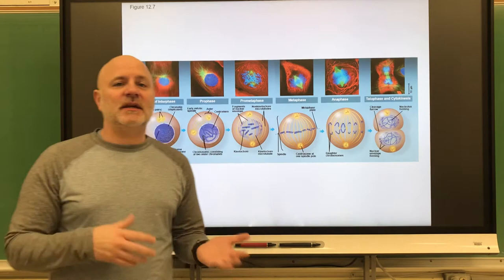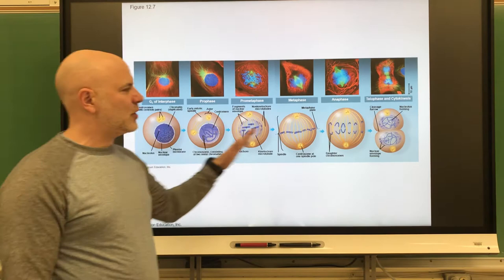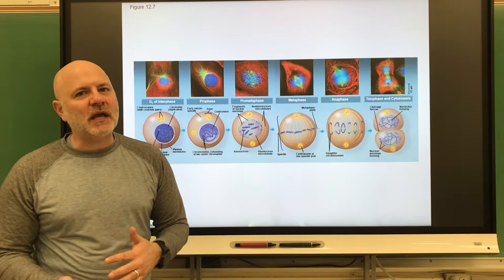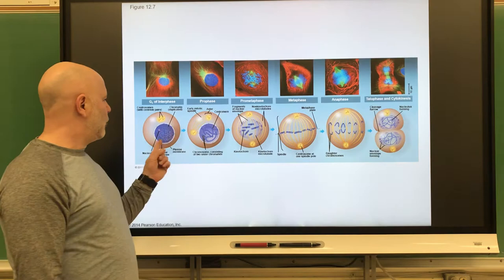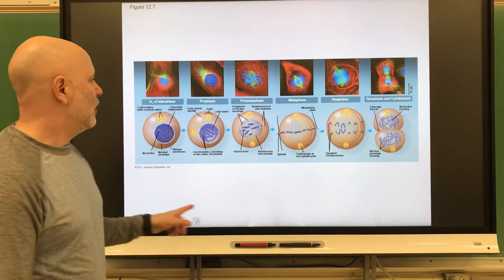Let's look at mitosis and the steps in mitosis. This is looking at the overall thing of everything that's going to occur in mitosis. A couple things to consider before we get started: the DNA is already replicated, we already have those duplicated chromosomes. We're going to start off with one diploid cell and we're going to end up with two diploid cells in the end.